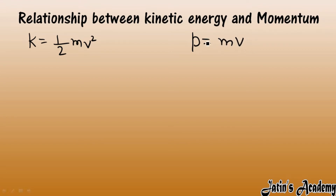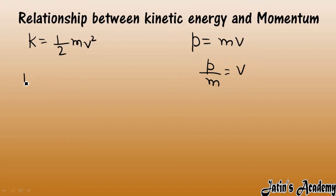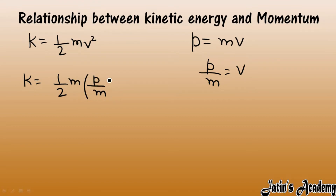From the momentum formula, we calculate the value of velocity. Velocity we have as P by m. Now put the value of velocity in the expression of kinetic energy. Here we have half m, and velocity we are writing as P by m squared, so P by m squared becomes P squared by m squared after squaring both numerator and denominator.